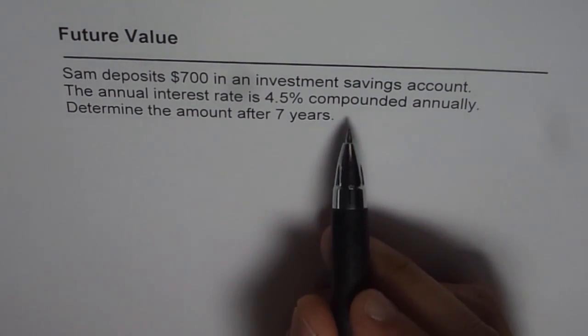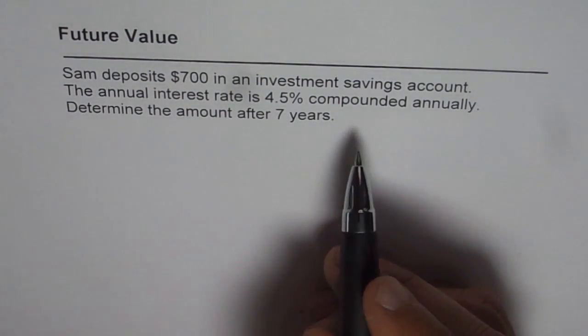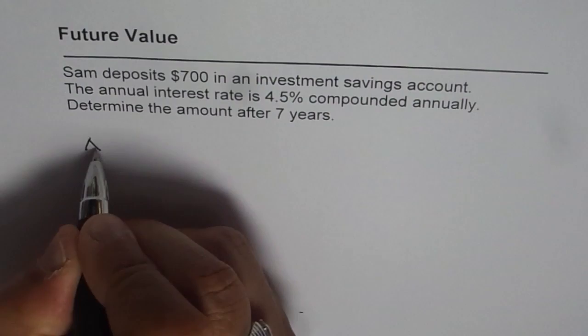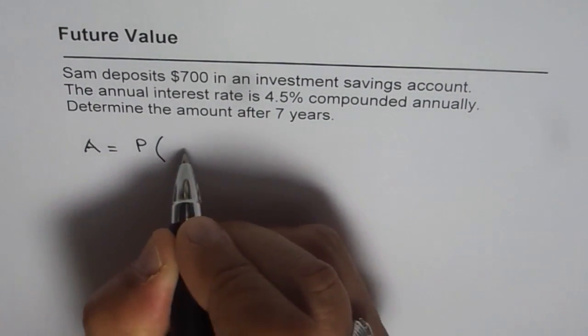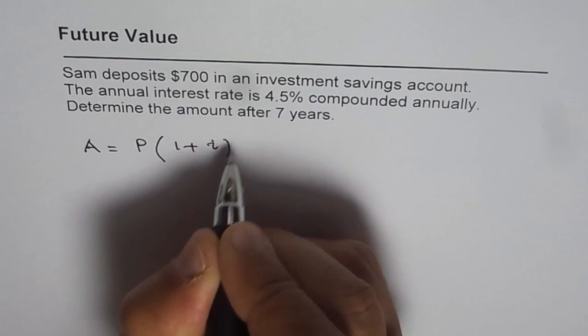So it is a compound interest case where future amount A can be written as present value times 1 plus I to the power of N.